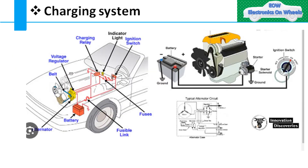As you can see in this figure, the alternator is connected to the engine through a belt. The alternator will generate current only when the engine is in running condition. The voltage regulator, which converts AC to DC, is always part of the alternator assembly. The alternator is connected directly to the battery through wiring harness to charge the battery, and when it comes to providing current to other loads, it provides current through the fuse box or junction box, which comes under power distribution.